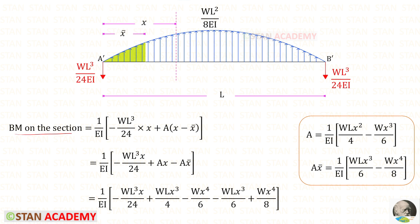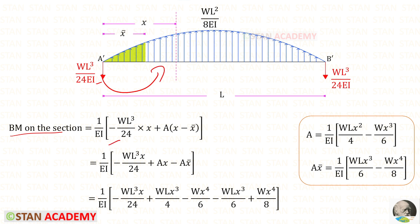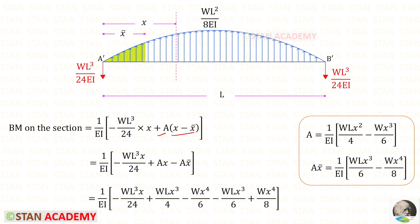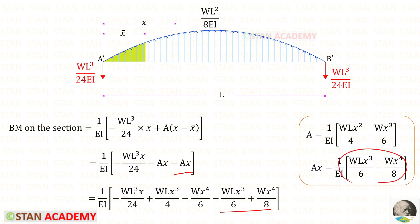Now let us find the bending moment on the section. We make a section at a distance x from A'. Using the right-hand side rule: R_A' is acting in the clockwise direction — negative — and the distance is x. The distributed load is acting in the clockwise direction so it will be positive. We have to multiply the area with the centroid distance, which will be x minus x-bar. So area × (x − x̄) expands to Ax minus Ax̄. We already know the area terms, and Ax̄ is available. For convenience we keep (1/EI) outside throughout.